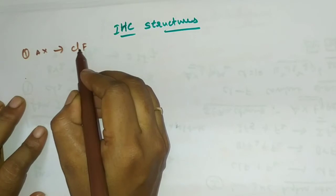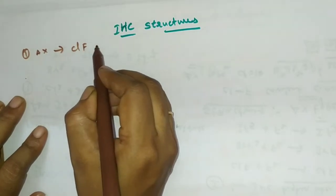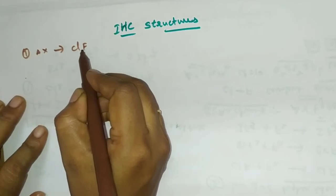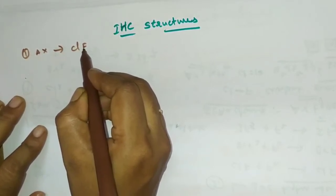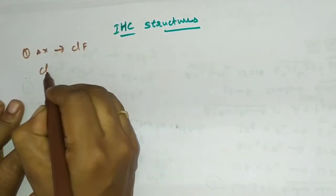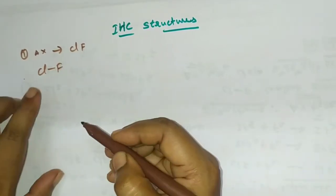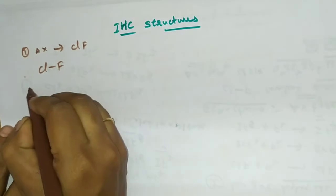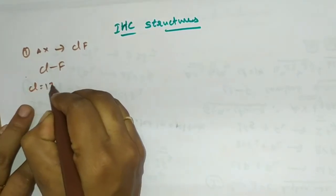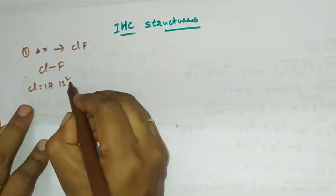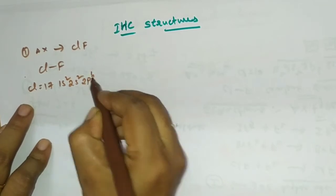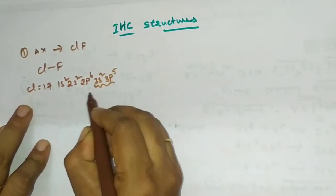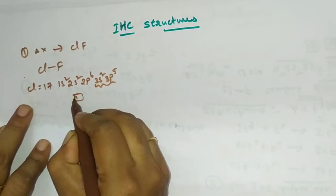That two form the interhalogen compound. They form one bond, that bond is called covalent bond, sharing of electrons. Cl bond with F. So here just in general example, chlorine having 17 number, its electronic configuration 1s2 2s2 2p6 3s2 3p5.